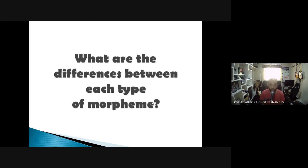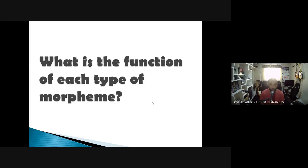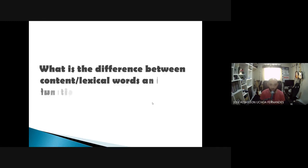Now what are the differences between each type of morpheme? We learned that these types of morphemes exist in relation to each other. They are defined in relation to each other. So what is a bound morpheme? It's what's not a free morpheme. What is a grammatical morpheme? It's what's not a lexical morpheme. What is a function morpheme? It's what is not a content morpheme, and so on. So what is the function of each type of morpheme, and what is the difference between the content and lexical words, for example, or function and grammatical words?